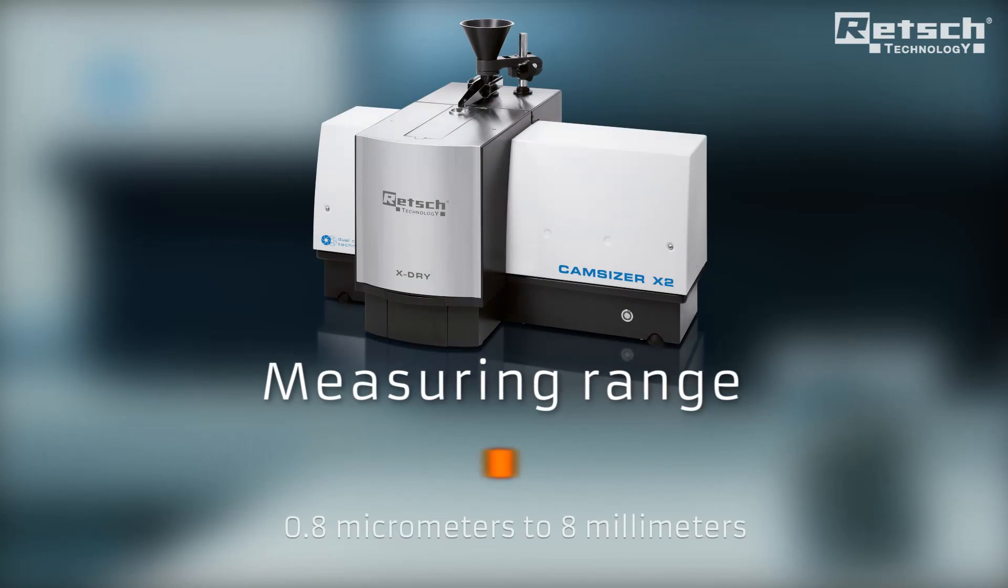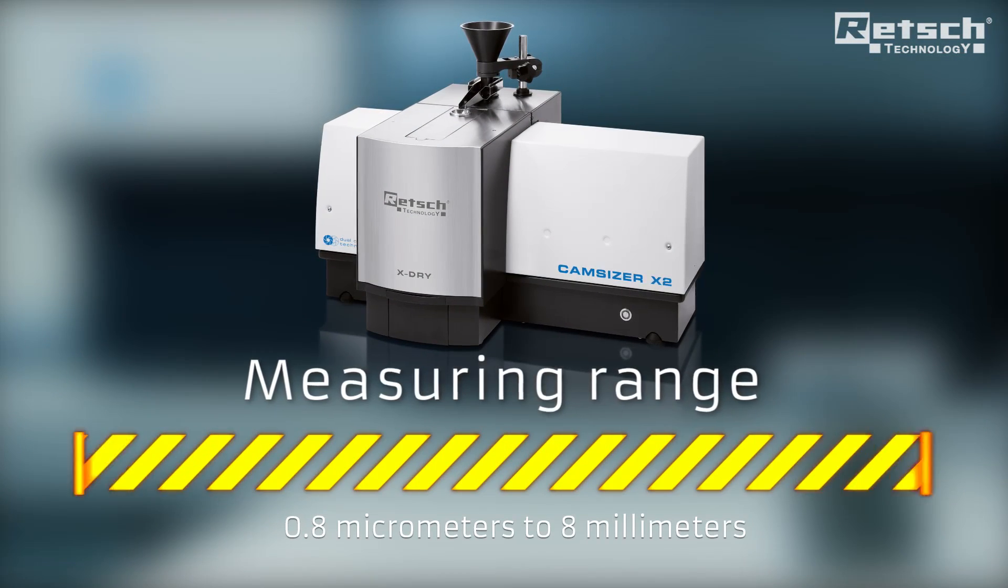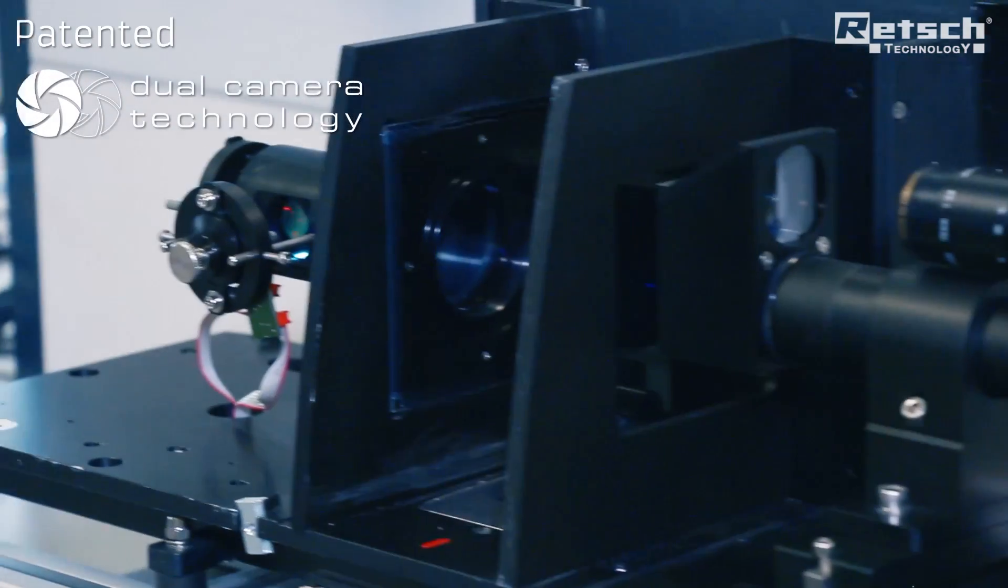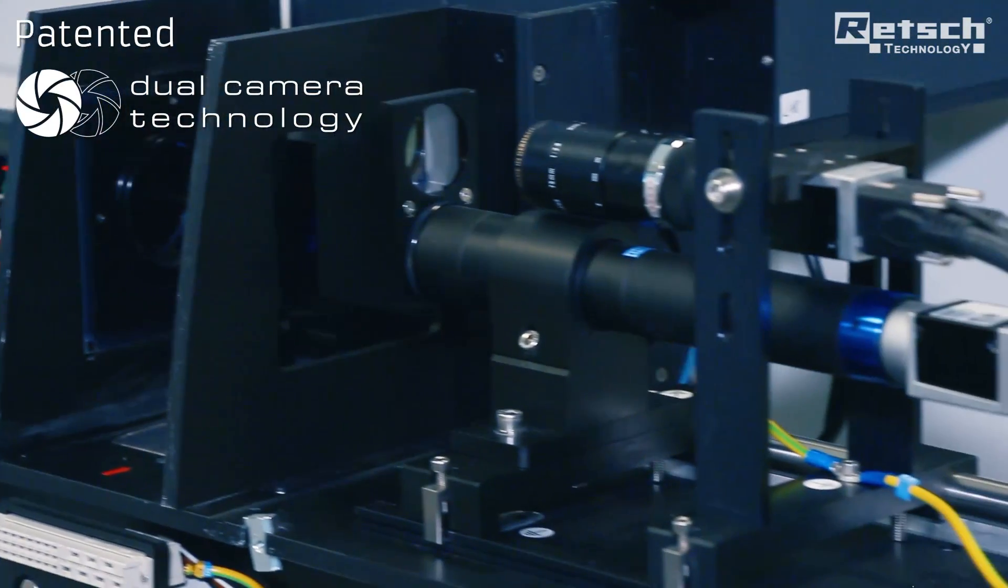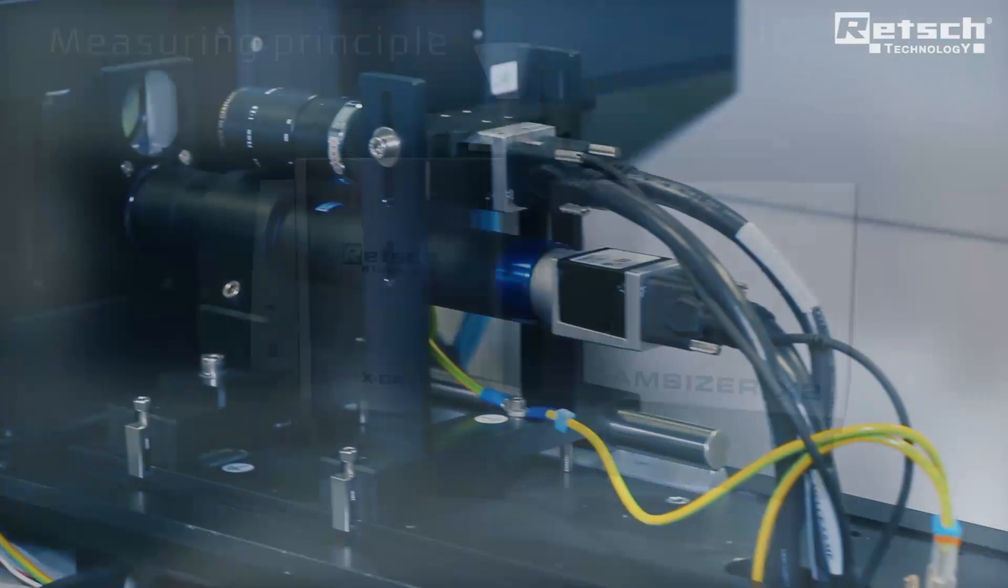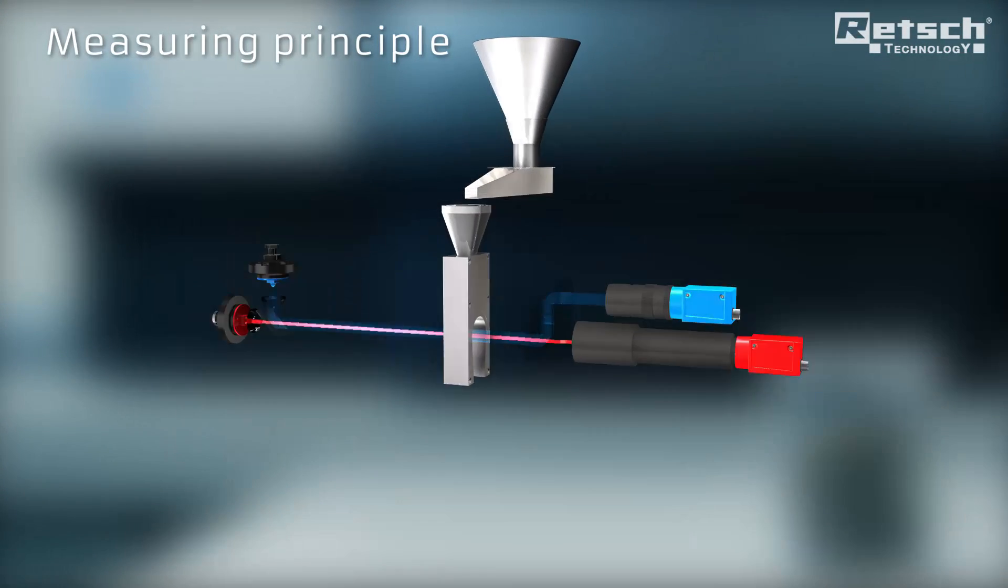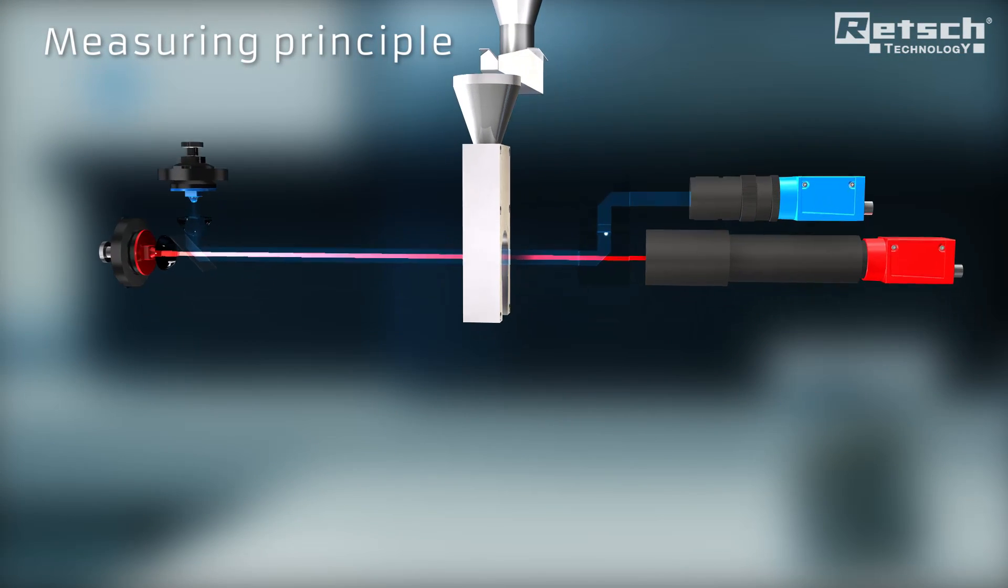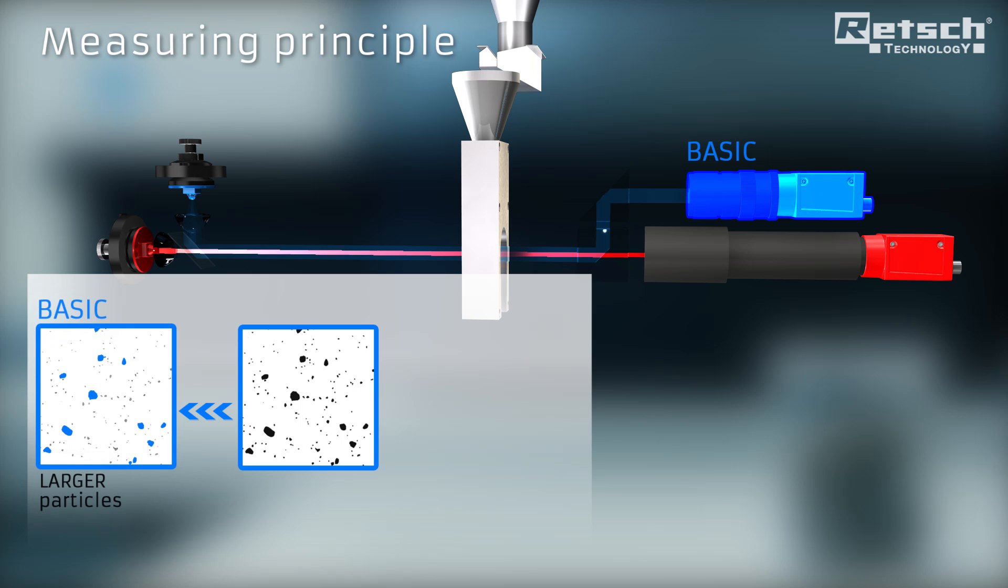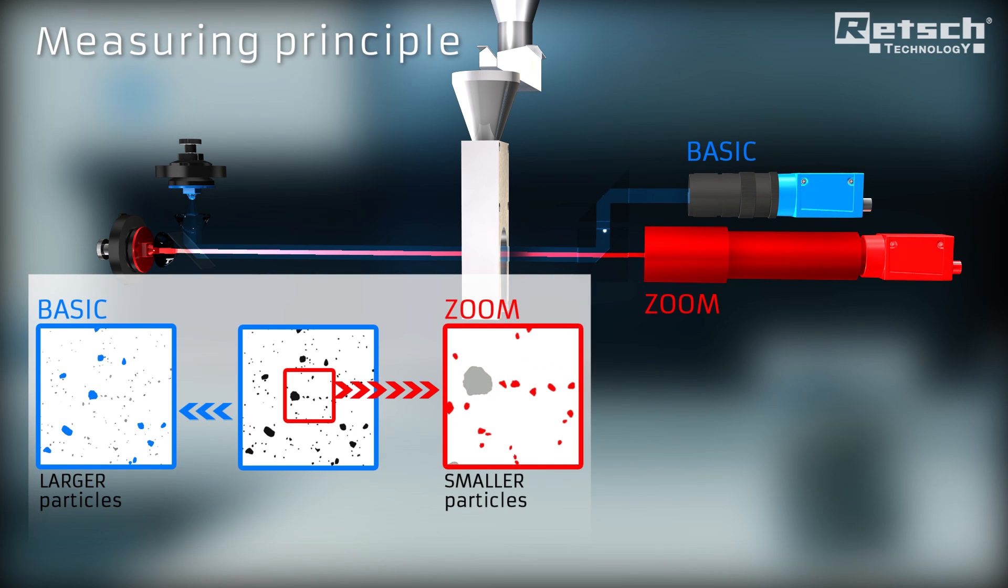The CamSizer X2 covers an extremely wide size range in only one measurement run. This is made possible by the patented dual camera technology, where a basic camera detects larger particles, whereas a specially designed high-resolution zoom camera analyzes particles with high accuracy.